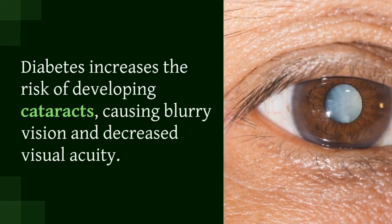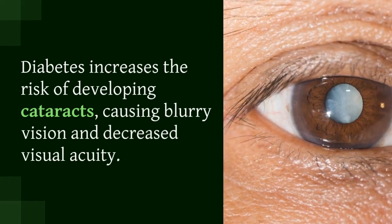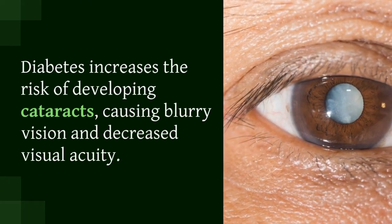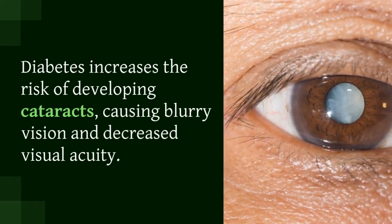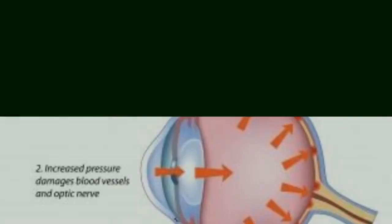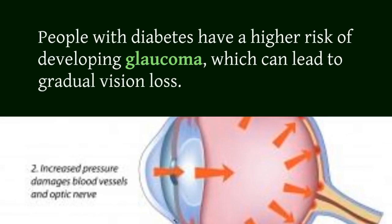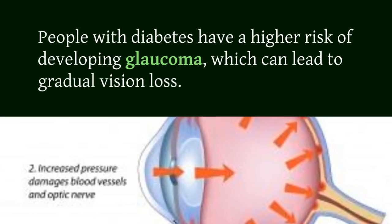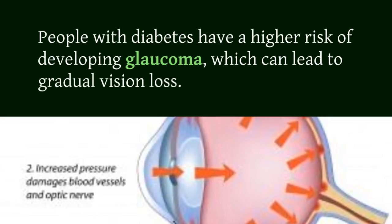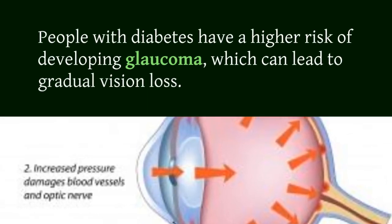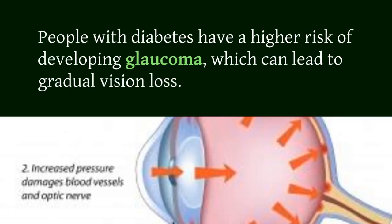Diabetes increases the risk of developing cataracts, causing blurry vision and decreased visual acuity. People with diabetes also have a higher risk of developing glaucoma, which can lead to gradual vision loss.